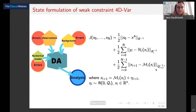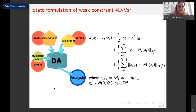What is data assimilation? In data assimilation, we're estimating the state of a dynamical system. This is done by combining observations of the system together with a prior estimate of the state, called the background, which usually comes from a run of a numerical model. The errors of all components are taken into account, and the estimate is called the analysis. One application is numerical weather prediction, where it is used to obtain initial conditions for a weather model. In this application, the state vector can have a billion variables, and 10 million observations can be assimilated, so it is very important to have efficient methods.